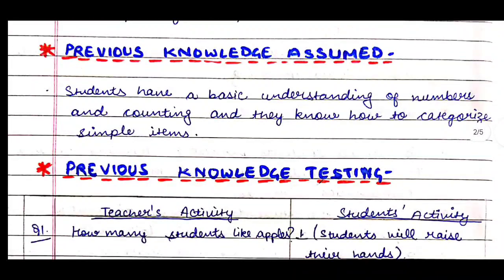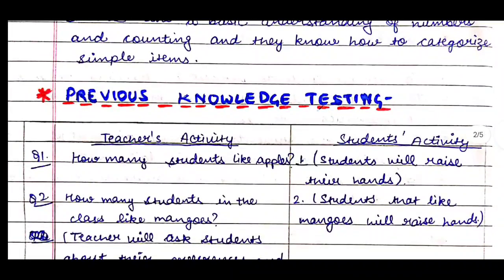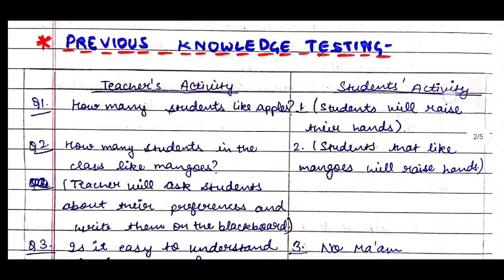The next heading is previous knowledge assumed. Students have a basic understanding of numbers and counting and they know how to categorize simple items. Then comes previous knowledge testing, where we make two columns: teacher's activity and student's activity. Here we write the questions we are going to ask and the assumed answers of the students.